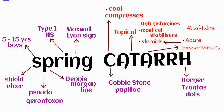In this video we are going to remember the signs, symptoms, and treatment of Vernal Keratoconjunctivitis. Its other name is 'Spring Cutter' and it is the most important topic for third year MBBS. Vernal Keratoconjunctivitis is called Spring Cutter because it is most common in spring and summer.